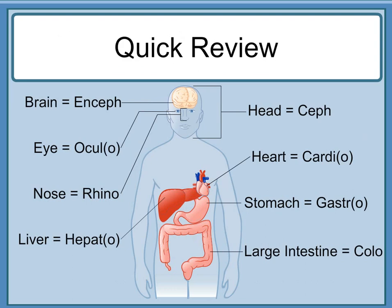Quick review: brain is 'enceph-'; eye is 'ocul-' or 'oculo-'; nose is 'rhino-'; liver is 'hepat-' or 'hepato-'; head is 'ceph-'; heart is 'cardi-' or 'cardio-'; stomach is 'gastr-' or 'gastro-'; large intestine is 'colo-'.